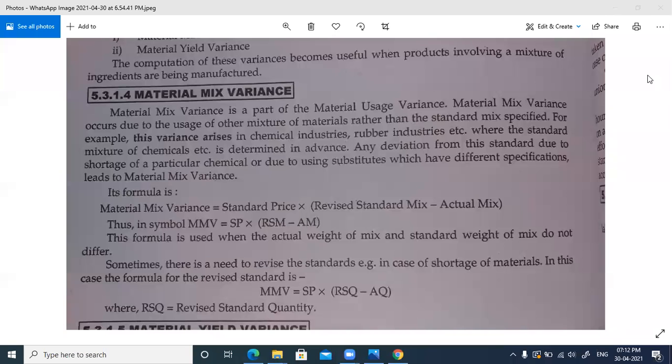The material mix variance is when you have two different materials for a new product, and the standard raw material A and raw material B ratio has already been decided - it's predetermined. The material mix variance is a concept in product raw materials mix. Let's go to a problem so we'll understand this much better.